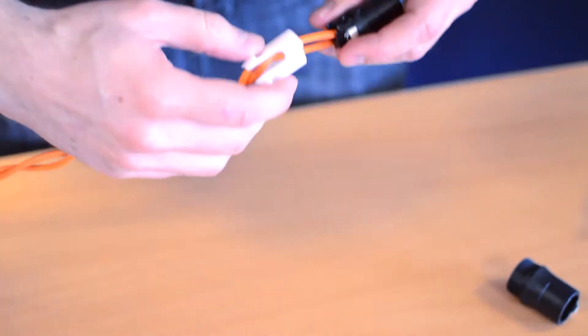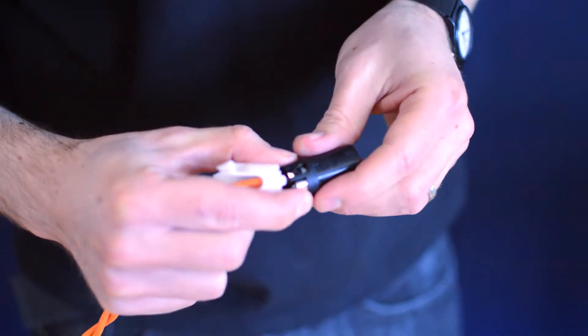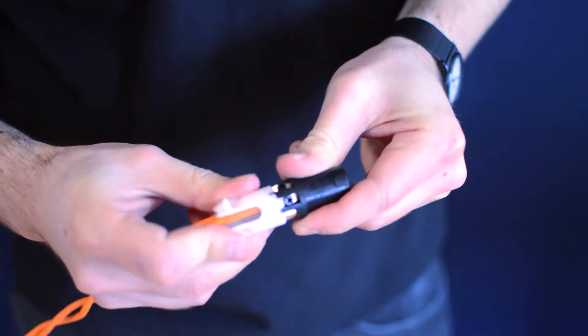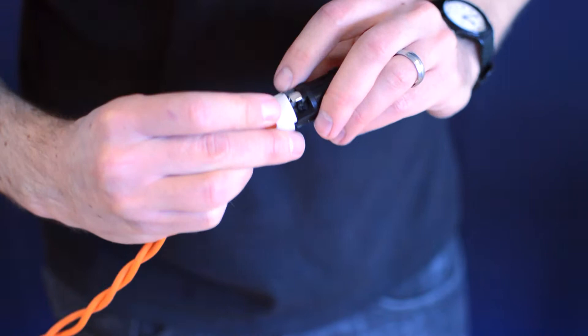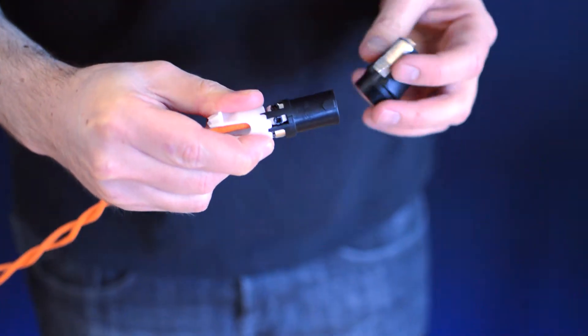If you pull the strain relief up, what you'll notice is there's a little notch sticking up on the NL4. There's a matching one on the strain relief too, which is just there. So you need to line those up and just locate all the little pins in the tabs there.